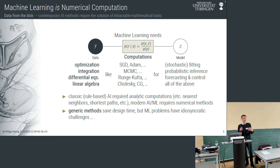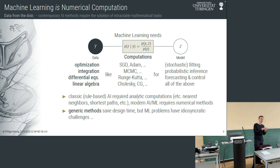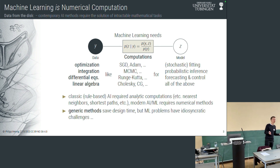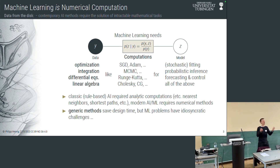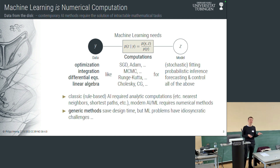And then there is linear algebra, because linear algebra is a special case, or the basic case, of all of the above: linear algebra to solve quadratic or least-squares optimization problems — otherwise known as Gaussian process inference — linear algebra to solve Gaussian integrals, and linear algebra to solve linear differential equations, otherwise known as linear Gaussian systems. These problems, though, are not new. They are actually much older than machine learning and AI.